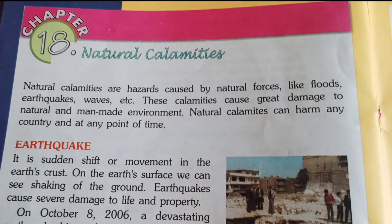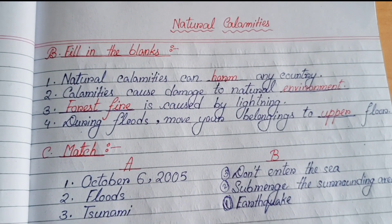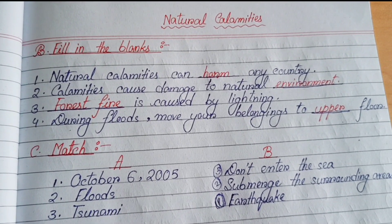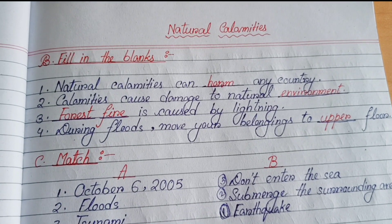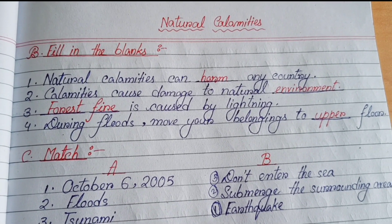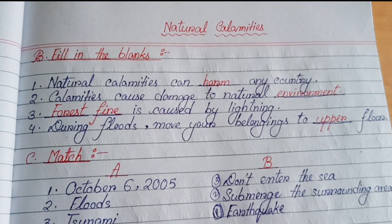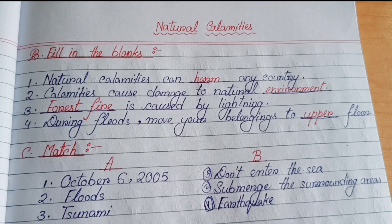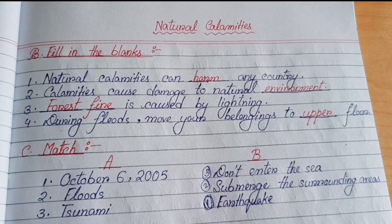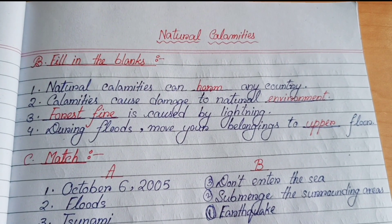So let's start Natural Calamities. At first, I solve the objective question answers. Number B, fill in the blanks. Number 1: Natural Calamities can harm any country. Number 2: Calamities cause damage to natural environment. Number 3: Forest fire is caused by lightning. Number 4: During floods, move your belongings to upper floor.